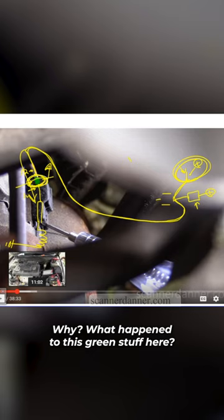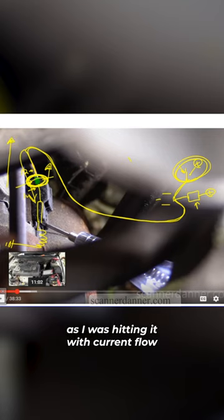What happened to this green stuff here? Its resistance climbed and climbed and climbed as I was hitting it with current flow from the power probe. There's warmth there now.